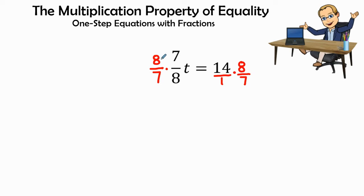Now, as we look at the 8 over 7 multiplied by 7 over 8, it is going to cancel each out. So 1 times 1 is going to bring the t, my variable, all by itself.